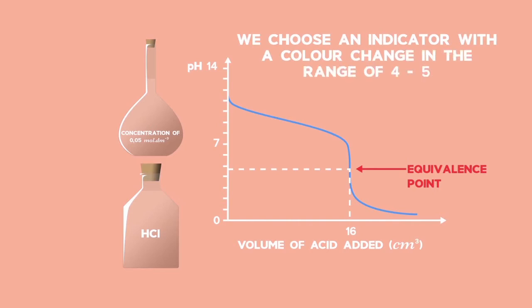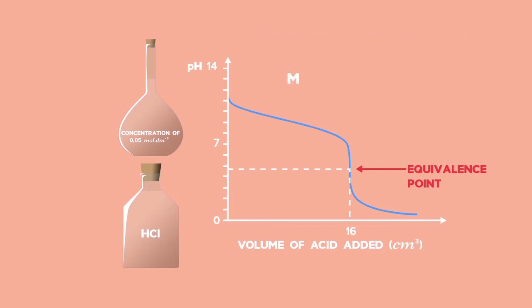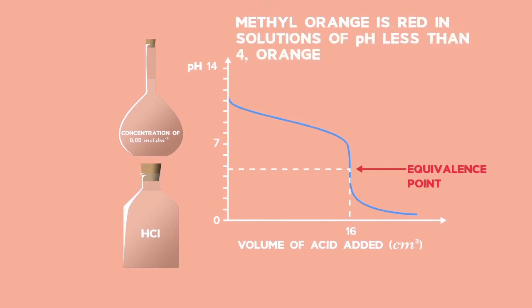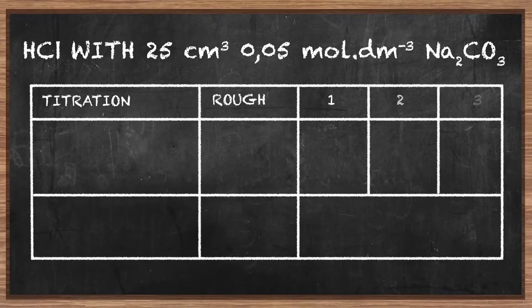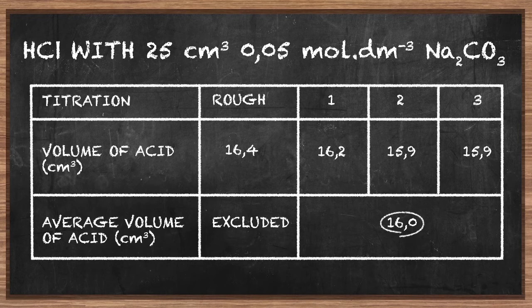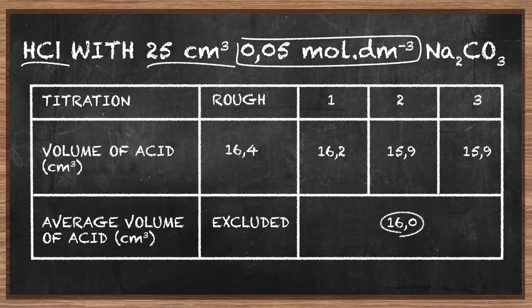The end point will be reached at about pH 4 or just below that. We choose an indicator with a colour change in the range of 4 to 5. Methyl orange fits these requirements. Methyl orange is red in solutions of pH less than 4, orange at about pH 3.5 to 4.5, and yellow in solutions of pH higher than 5. The results of the titration show that at the end point, 16 cm³ of hydrochloric acid neutralised 25 cm³ of 0.05 moles per decimetre cubed of sodium carbonate solution.